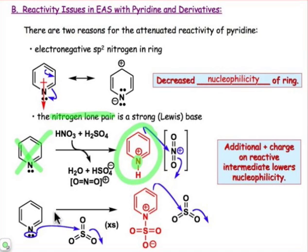In the case of a six-membered ring heterocycle, the first thing that happens is it functions as a base — it picks up a proton or picks up a Lewis acid — and makes that ring an even worse nucleophile than it was initially.